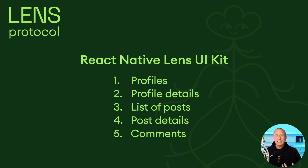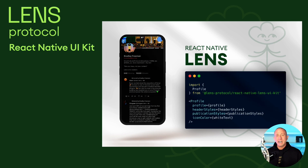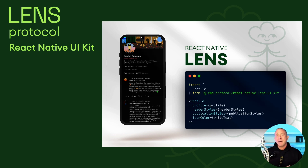With just a couple of lines of code, you can get started with a really high-quality, good-looking app. This is an example of what that might look like — this is a profile component. The only thing you need to pass in is either a profile or a profile ID, and the UI kit takes care of everything else. We're going to be exploring and building out an app using this component as well as a few others.